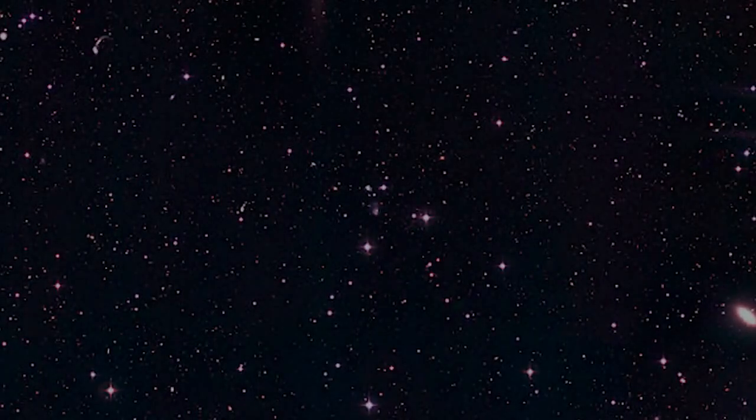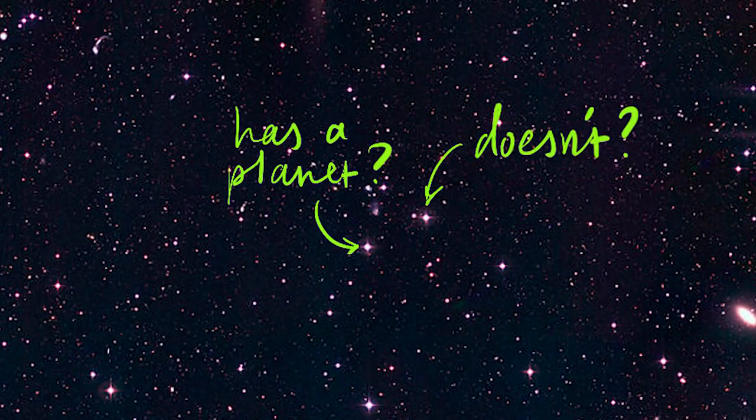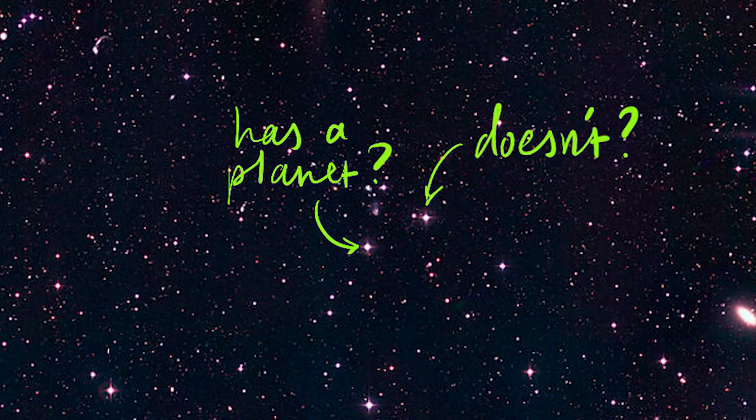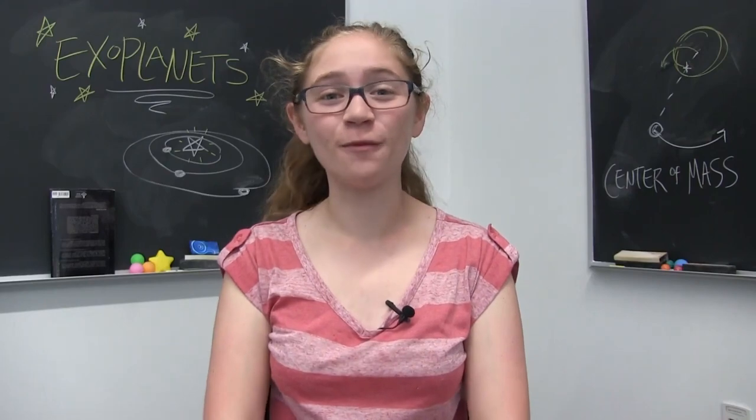What we can see are the stars they orbit. So if we can distinguish a star with a planet from a star without, we can find exoplanets. But how do we do that? It turns out the solution is a simple method that comes straight out of basic physics.